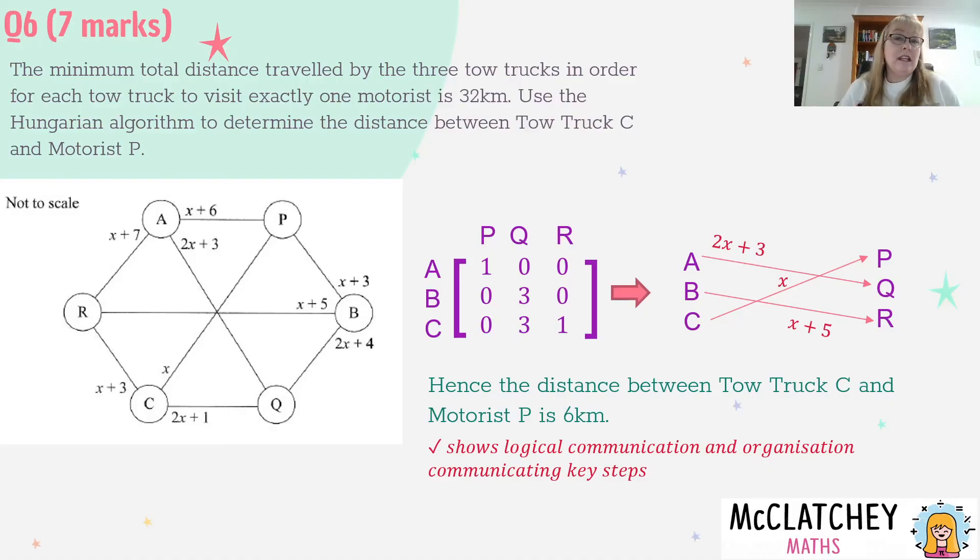We also could have achieved a seventh mark for logical communication and organization, communicating key steps. That wouldn't necessarily mean you'd have to write a statement, although it's always a good idea. It's a word problem, so communicate with a statement and also make sure you're giving X's value with units of measurement being kilometres. Perhaps they were looking for a statement, units, or just that overall process of writing things down like the words row reduction, column reduction, showing the covers.